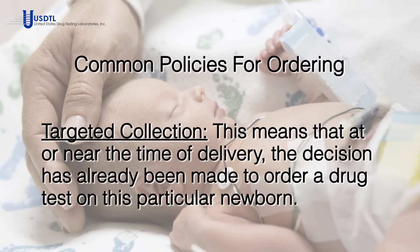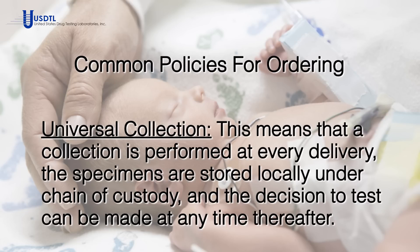At this point we should address two common policies for ordering newborn drug screens. The first policy is the targeted collection, meaning that at or near the time of delivery, the decision has already been made to order a drug test on this particular newborn. The second policy is the universal collection, meaning that a collection is performed at every delivery, the specimens are stored locally under chain of custody, and the decision to test can be made at any time thereafter. The policy of your organization affects how the chain of custody is initiated and documented.